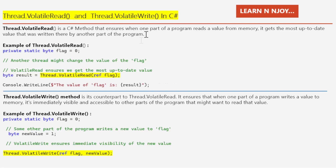Let's start with Thread.VolatileRead. This C# method guarantees that when one part of a program reads a value from memory, it gets the most up-to-date value that was written by another part of the program. It's like making sure everyone sees the latest information on a bulletin board without missing any updates. Let's understand how to use it in a C# program.